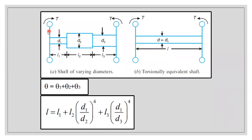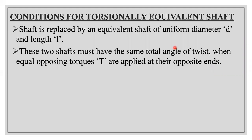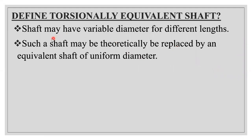The shaft will be fixed at both ends, with two rotors rotating in opposite directions — one rotor rotating clockwise and another rotating anti-clockwise. What we are going to do is convert the variable shaft diameter into a torsionally equivalent shaft with a uniform diameter. This is the prime purpose of this video. There will be a variable diameter with different lengths, and we are going to replace it with an equivalent shaft of uniform diameter.